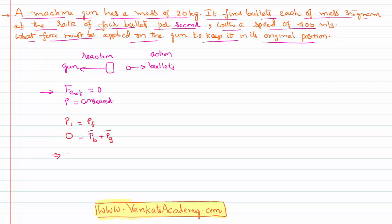That implies we can say momentum of the gun equals minus momentum of the bullet. Minus indicates that if the bullet moves in a forward direction, the gun recoils in a backward direction. We can write momentum of the gun as mass of the gun times velocity of the gun, minus mass of the bullet times velocity of the bullet.